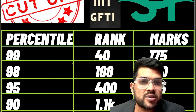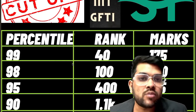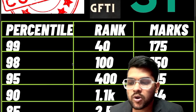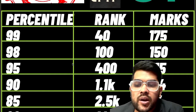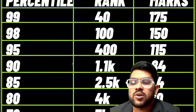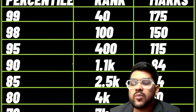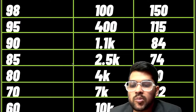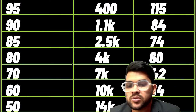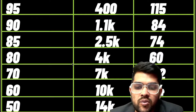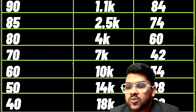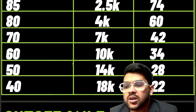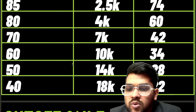I will also guide you for the counseling process. For 85 percentile, 74 marks are required and the ST rank will be 2,500. For 80 percentile, 60 marks are required and rank will be 4,000. For 70 percentile, marks required are 42 and rank will be 7,000. For 60 percentile, 34 marks are required and rank will be 10,000.